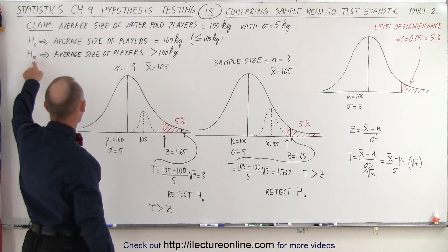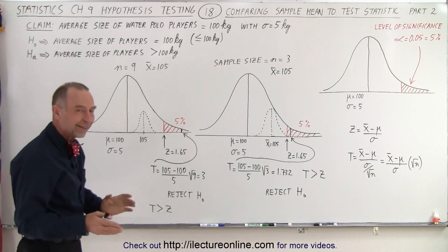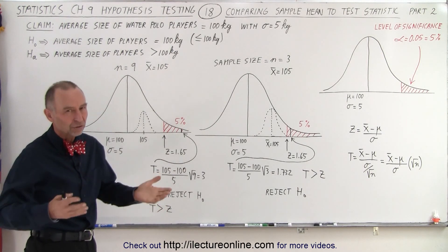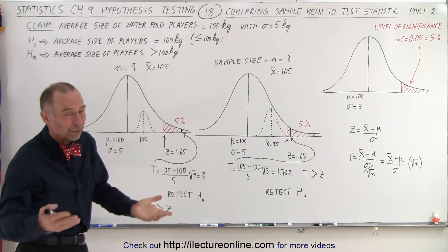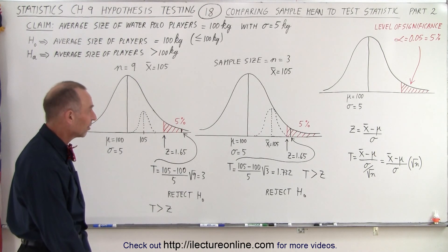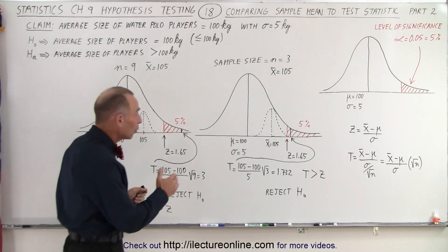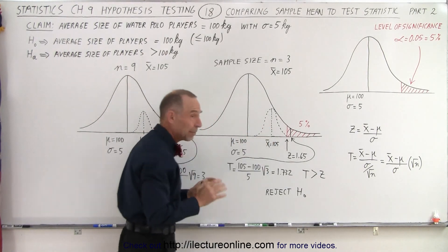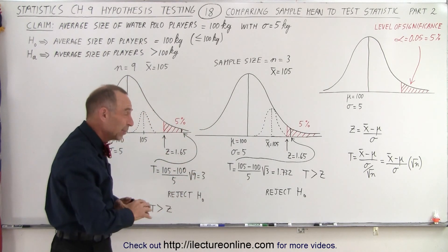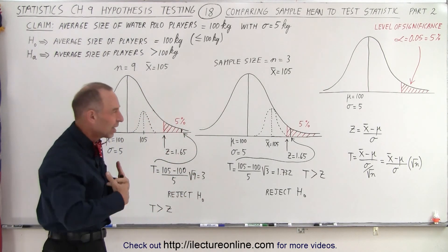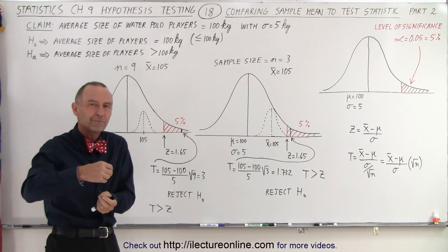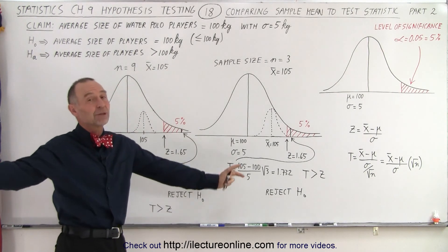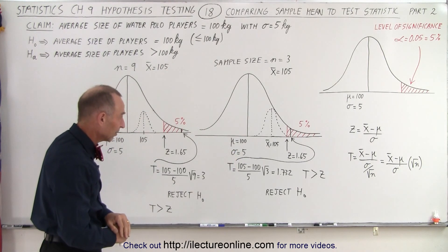So we tried sample 1 and sample 2, and in each case it didn't cause us to reject the null hypothesis. We failed to reject the null hypothesis because the sample size was so small that even though the difference between the mean of the population and the mean of the sample was significant — a total of 5 — it wasn't enough to give us confidence, so therefore we failed to reject the null hypothesis.